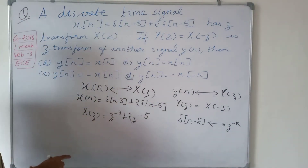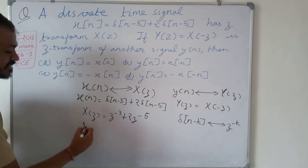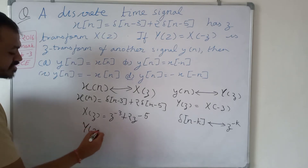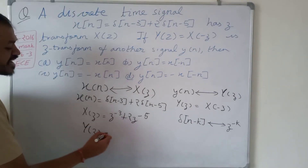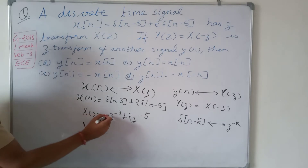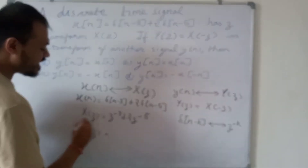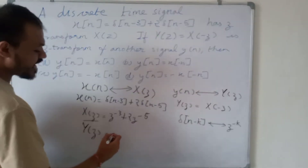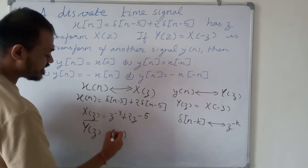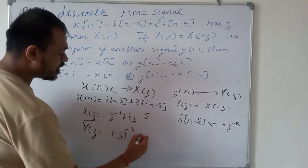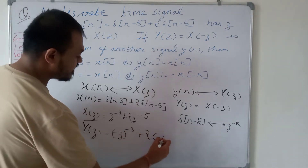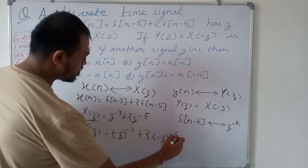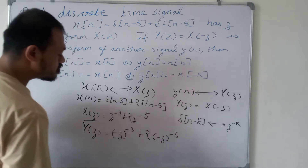So X of z is z to the power minus 3 plus 2 z to the power minus 5. Since Y of z equals X of minus z, we can get Y of z by substituting z with minus z in the equation of X of z.